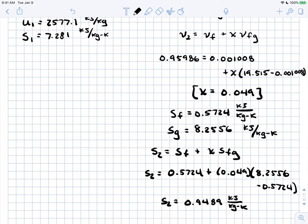With this information, we can determine the entropy change of the water. Delta S equals mass times (S2 - S1), so 0.9489 minus 7.281. But we still don't have mass, so let's calculate the mass in our system.